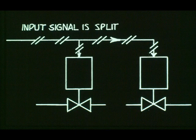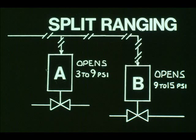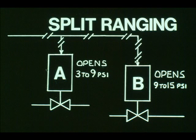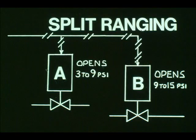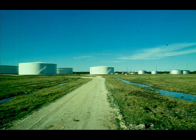Piston operators can be split ranged. The term split ranged means dividing the input signal between two or more control valves. For example, Valve A will open from 3 to 9 PSI, and Valve B will open from 9 to 15 PSI. This dual valve installation — one small valve and one large valve — permits great rangeability. A disadvantage in using a piston operator is the need for a source of air supply, which can become a problem in remote locations.